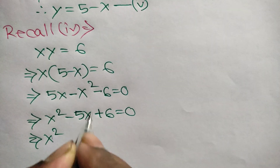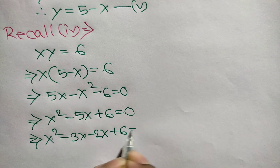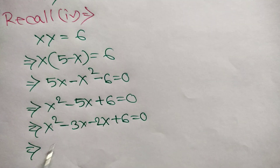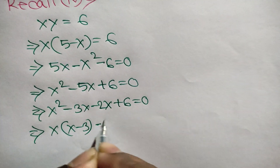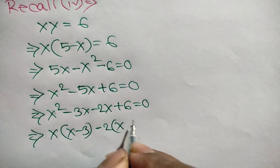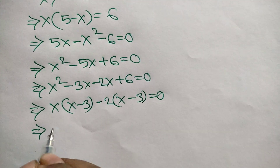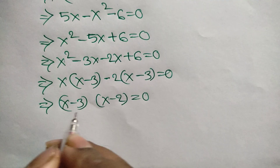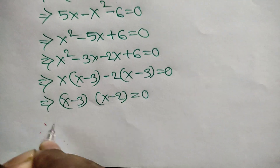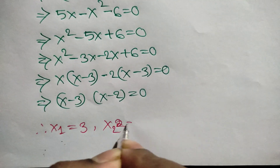Now, negative 5x can be written as negative 3x minus 2x. So x squared minus 3x minus 2x plus 6 equals 0. Taking out common factor x from the first two terms gives x times x minus 3, and taking out negative 2 from the last two terms gives negative 2 times x minus 3, all equal to 0. Factoring out x minus 3 gives x minus 3 times x minus 2 equals 0. So x₁ equals 3 and x₂ equals 2.